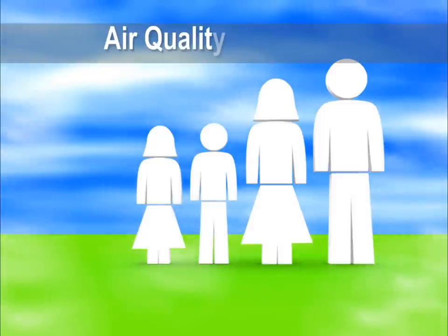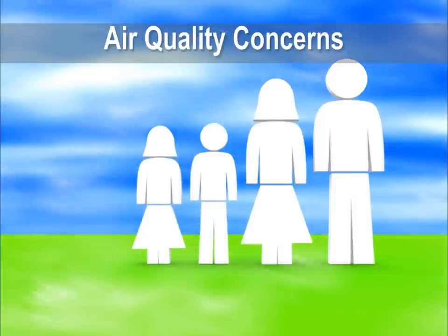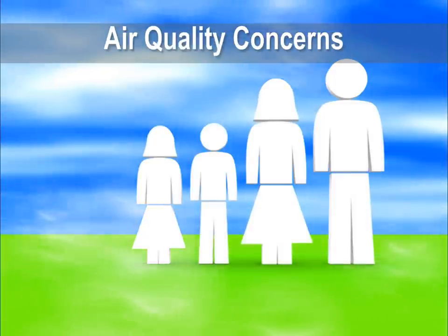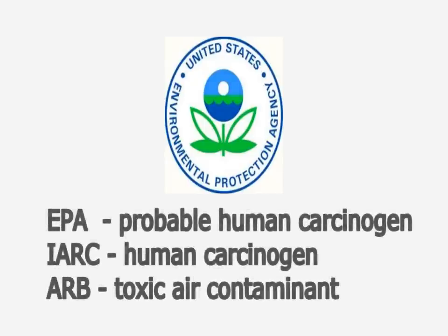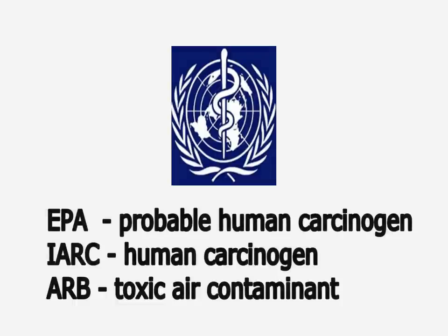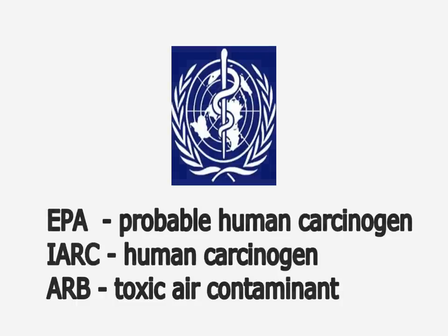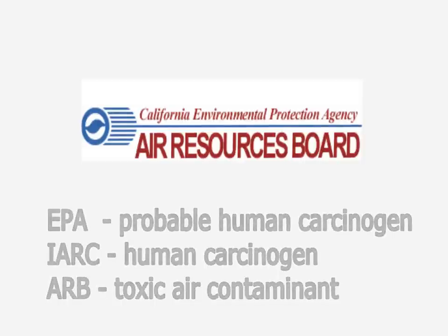This means it may present substantial concentrations both indoors and outdoors. As far back as 1987, the Environmental Protection Agency classified formaldehyde as a probable human carcinogen. The International Agency for Research on Cancer does classify formaldehyde as a human carcinogen, and the California Air Resource Board has classified formaldehyde as a toxic air contaminant.